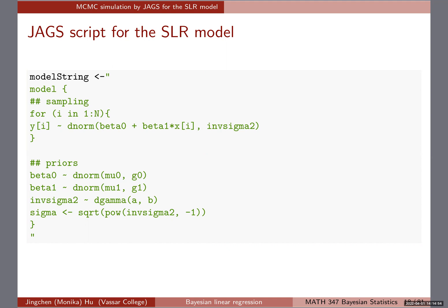After we're done with this part, we'll give you the rest of class to work on lab four. The simple linear regression model JAX script is not very complicated — it follows similarly to what we did with the normal model, but now we're adding parameters including the intercept, the slope, and the standard deviation.